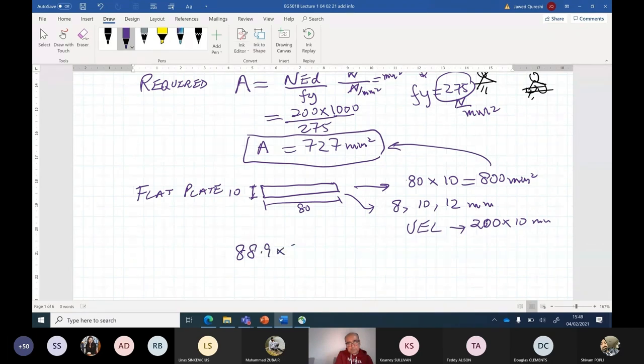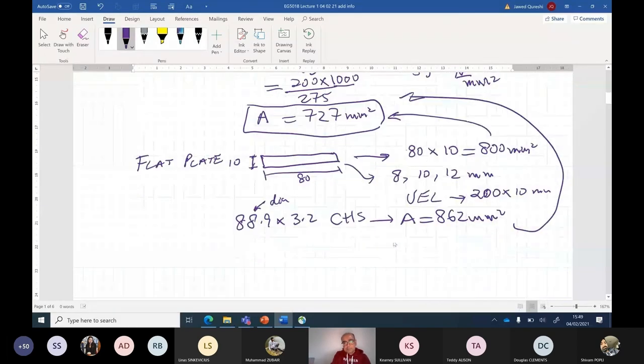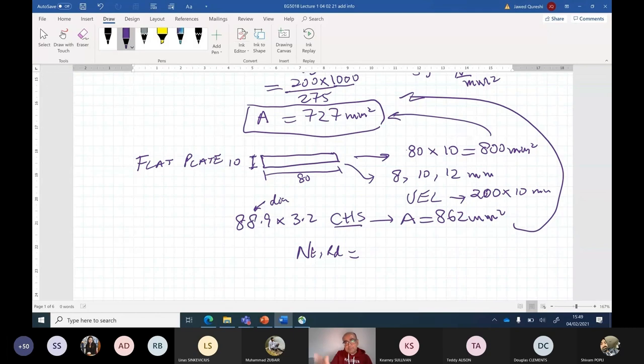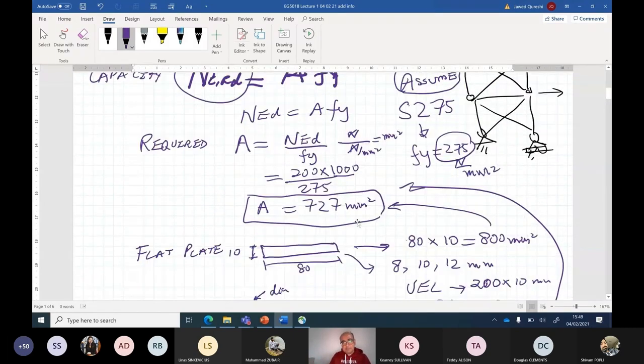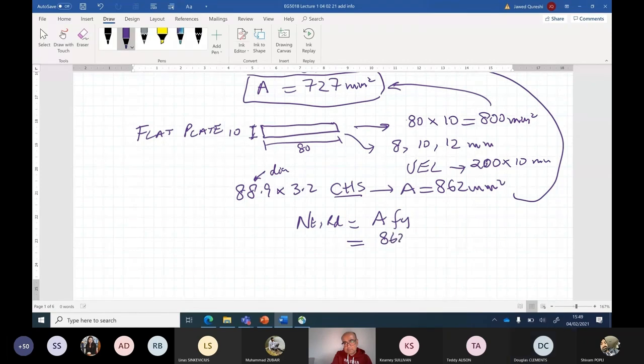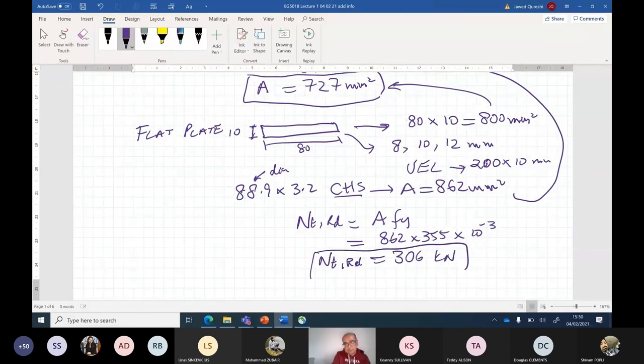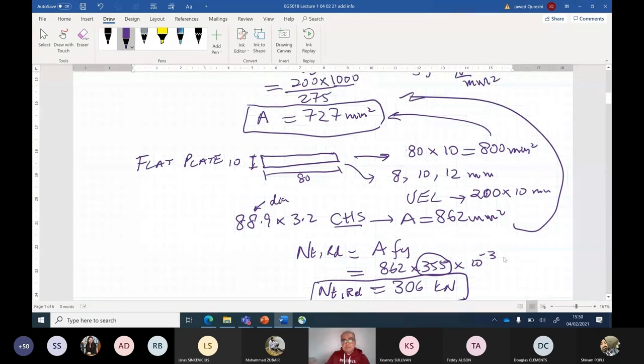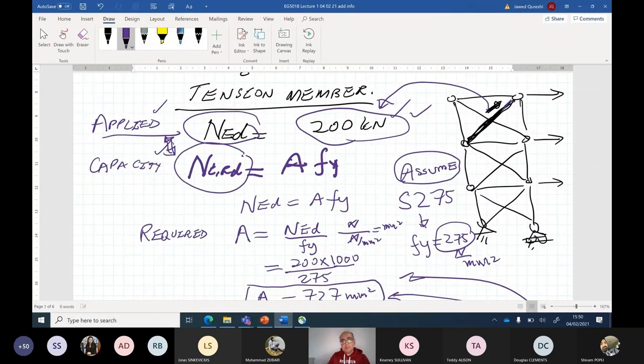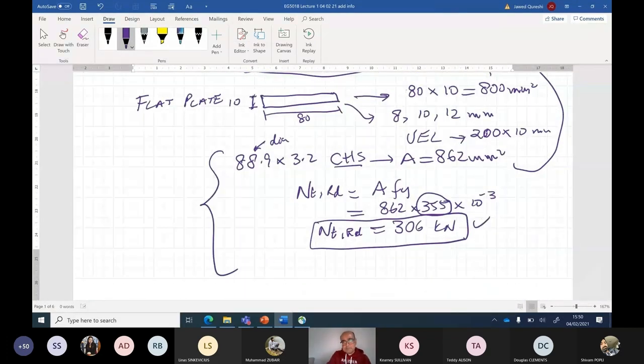88.9 by 3.2—this is diameter and this is wall thickness—CHS circular hollow sections. Its area is 862 millimeter square, which is higher than my required area. To work out the capacity, because CHS is only available in 355, my initial assumption was 275, so I will work out the revised capacity. 862 times 355 times 10 to the minus 3 to convert it into kilonewtons equals 306. The reason I've used this is because I used CHS for which Fy is only available in 355. So my resistance is higher than applied. Applied is 200 and resistance is 306, which means this is okay as well.